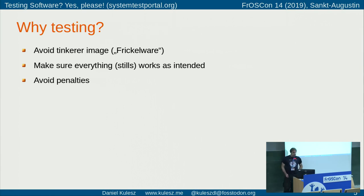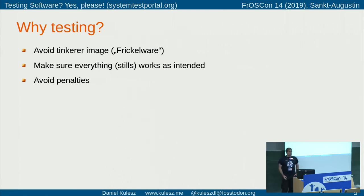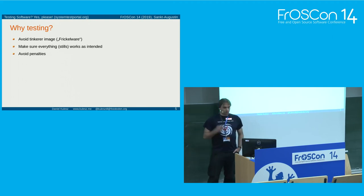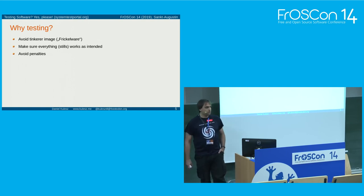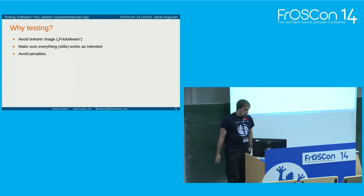So let's start with the motivation. Why testing? Even if we are in the open source world, we want to avoid the typical tinkerer image — the 'Frickelware' image in German — so we want to build software that works. If we do new releases we want to make sure it still works, and in the commercial space we want to avoid penalties for delivering software that does not work. We don't do testing to prove that our software works correctly, because as we all know, by testing you can only show that software contains bugs — that's the old rule by Edsger Dijkstra.